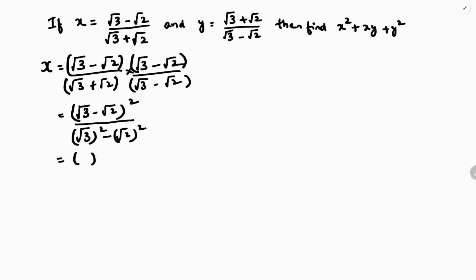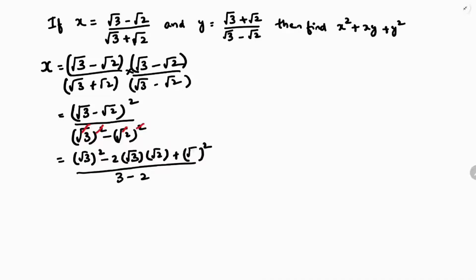The numerator is (a minus b) whole square, so a square minus 2ab plus b square. The denominator simplifies as squares and roots cancel, giving 3 minus 2 equals 1. With a as √3 and b as √2, the numerator becomes 3 minus 2 times √6 plus 2, which is 5 minus 2√6. So the value of x is 5 minus 2√6.